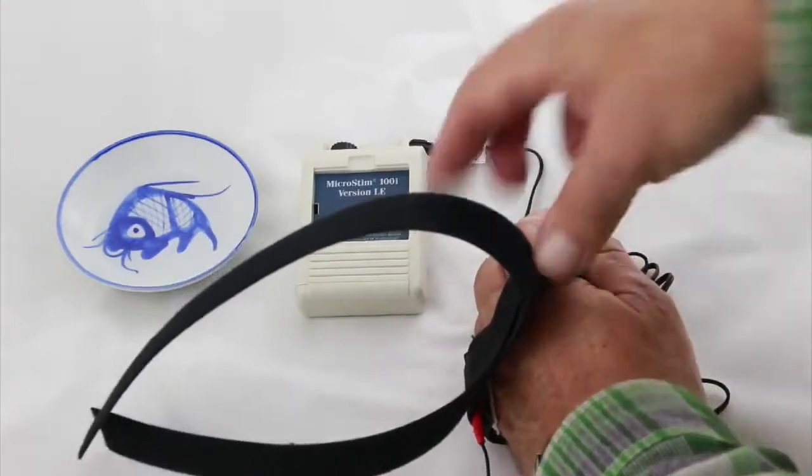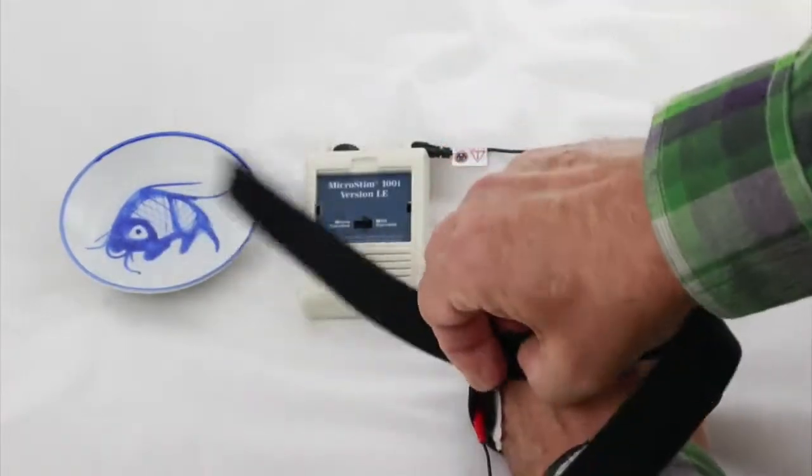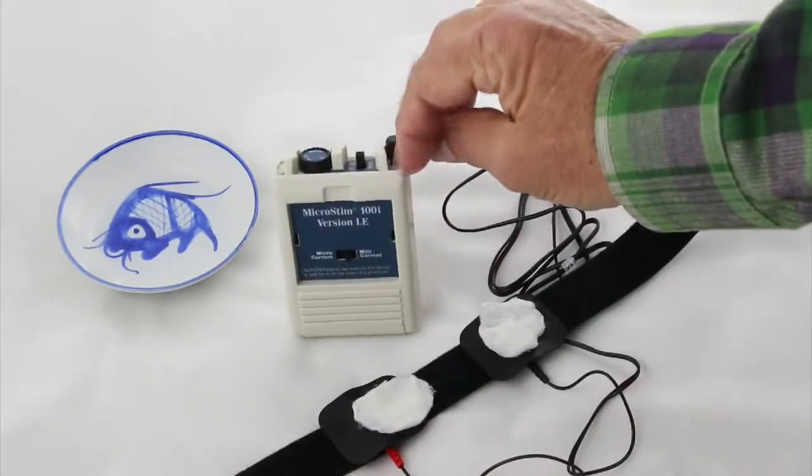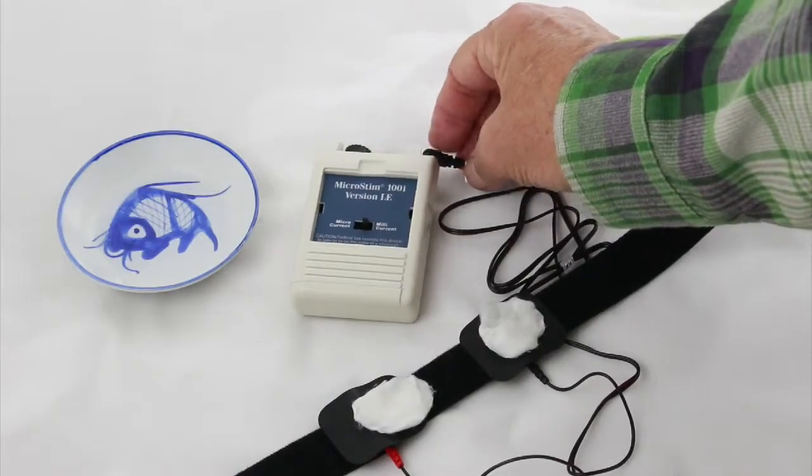So that is the Velcro strap with the carbon rubber electrodes. Same wire. There's only one place to plug in the wire in this unit. And so now this gives you two options to work with.